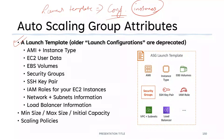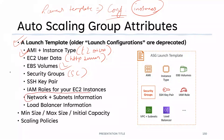A launch template contains: your AMI (Amazon Machine Image), instance type like T2 micro, EC2 user data — for example a script to create an HTTP server — storage volumes, security groups, SSH key pair, IAM roles for your EC2 instance if it needs to communicate with other services, and network/subnet information. Note: you should not give network and subnet information in the launch template — that should be configured in your Auto Scaling Group instead.